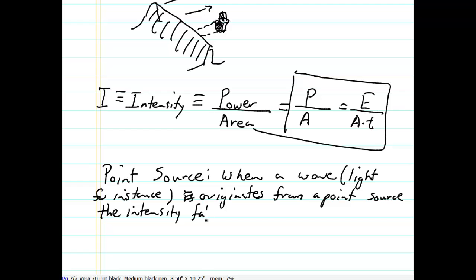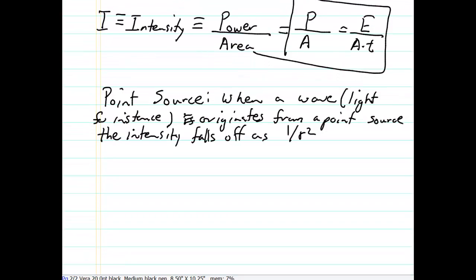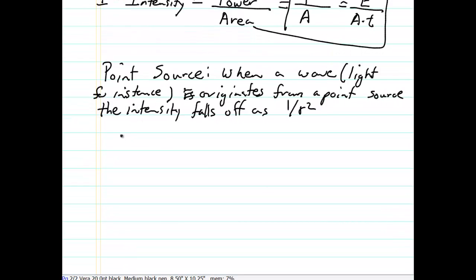...the intensity falls off as 1 over r squared. Let me try to explain why this is true. So I is proportional to 1 over r squared.